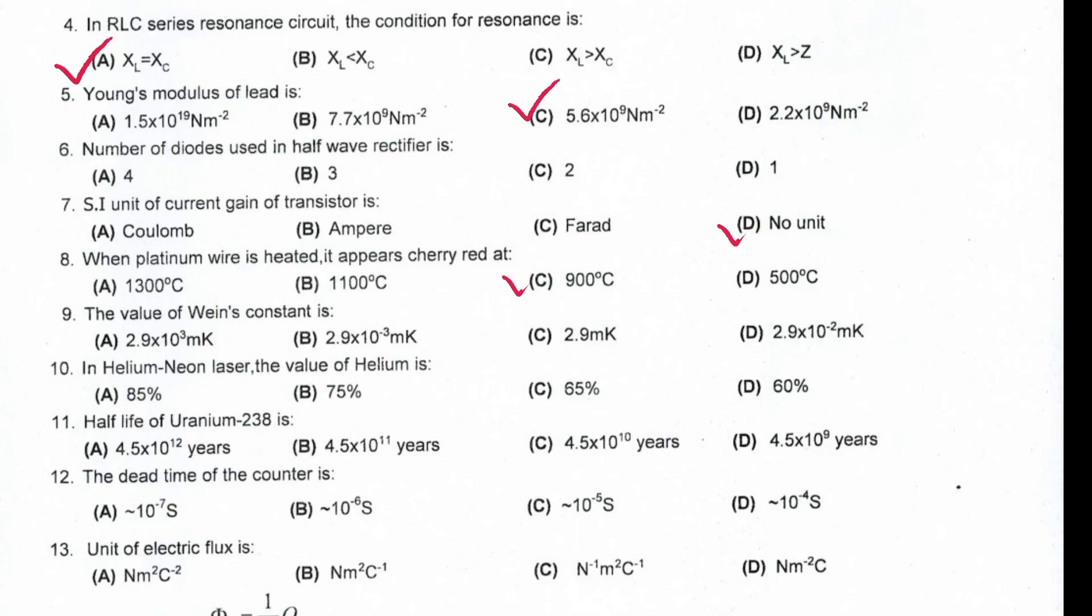The value of Wien constant is 2.9 multiplied by 10 to the power minus 3. In helium neon laser, the value of helium is 85%. Half-life of uranium 238 is 4.5 multiplied by 10 to the power 9 years.